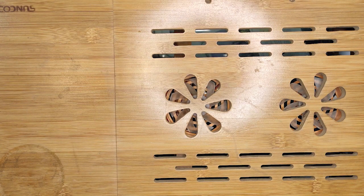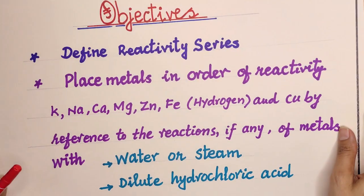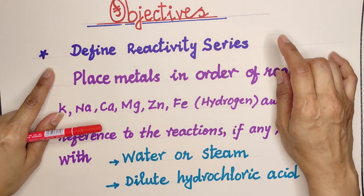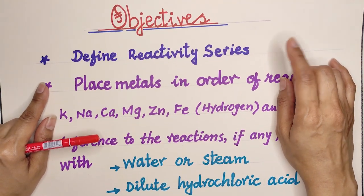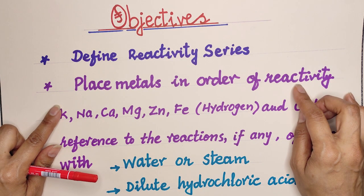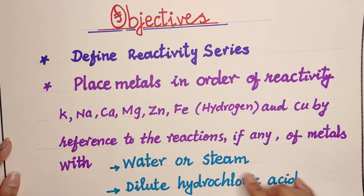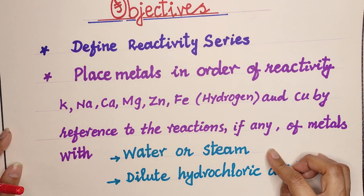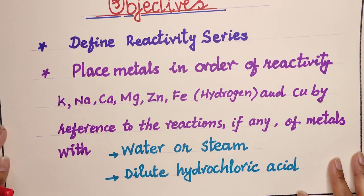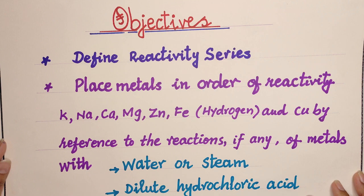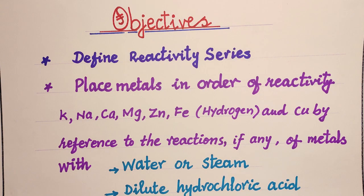So this is all about today's lesson. We have defined what the reactivity series is, placed metals in order of their reactivity, and covered reactions with water or steam and dilute hydrochloric acid. I hope you have learnt it very well. Don't forget to subscribe and like my channel.